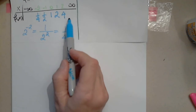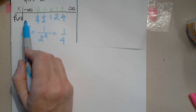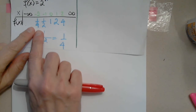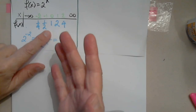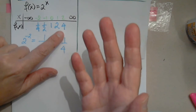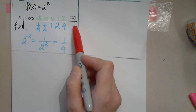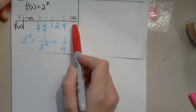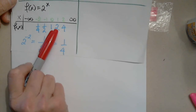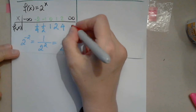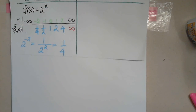Now I'm really interested in the end behavior — this way and this way. Going to the right: 1/4, 1/2, 1, 2, 4, 8, 16, 32, 64, 128... Where am I going this way? Positive infinity.